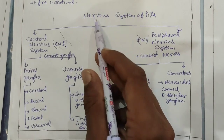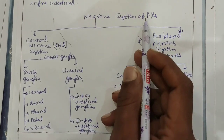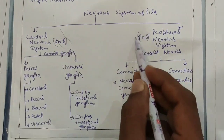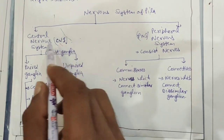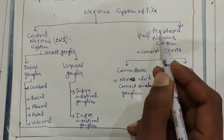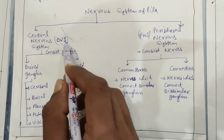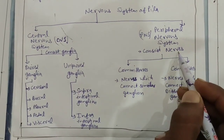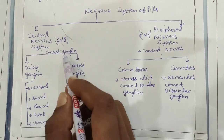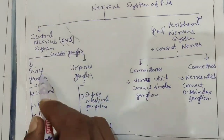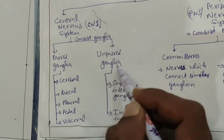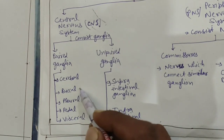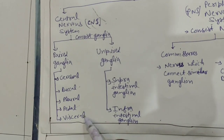We discuss the nervous system of Pila globosa through a chart. The CNS consists of ganglia and the PNS consists of nerves. In the central nervous system, some ganglia are present in pairs and some are unpaired. In Pila globosa, cerebral ganglion, buccal ganglion, pleural ganglion, pedal ganglion, and visceral ganglion are present.